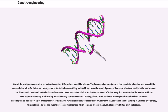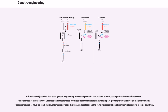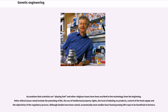Critics have objected to the use of genetic engineering on several grounds, including ethical, ecological, and economic concerns. Many of these concerns involve GM crops and whether food produced from them is safe and what impact growing them will have on the environment. These controversies have led to litigation, international trade disputes, and protests, and to restrictive regulation of commercial products in some countries. Accusations that scientists are playing God and other religious issues have been ascribed to the technology from the beginning. Other ethical issues raised include the patenting of life, the use of intellectual property rights, the level of labeling on products, control of the food supply, and the objectivity of the regulatory process. Although doubts have been raised, economically most studies have found growing GM crops to be beneficial to farmers.